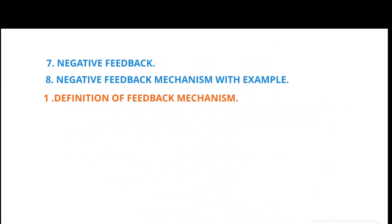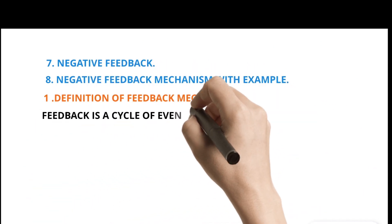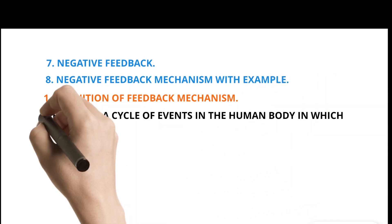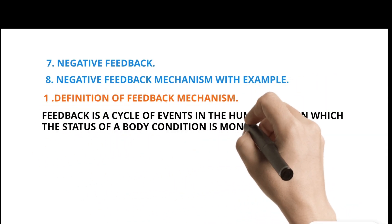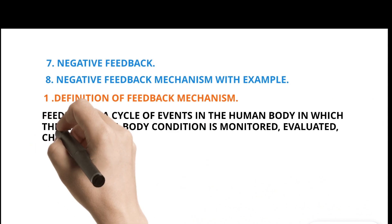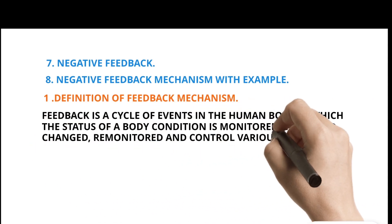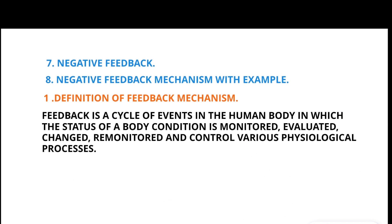Definition of Feedback Mechanism: Feedback is a cycle of events in the human body in which the status of a body condition is monitored, evaluated, changed, remonitored, and controls various physiological processes.